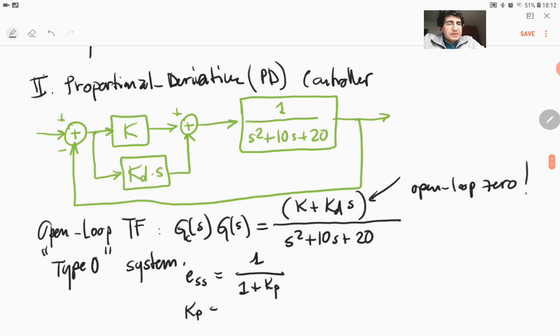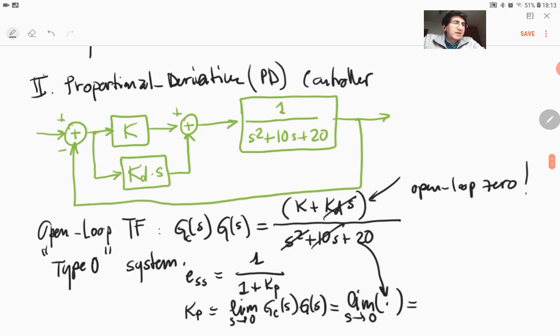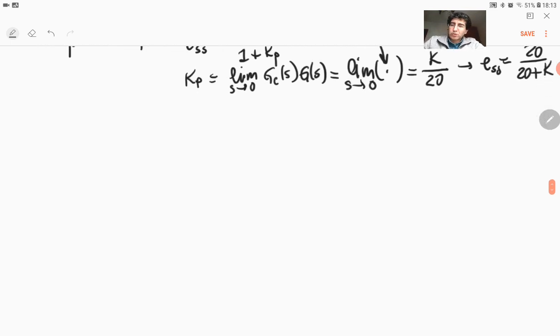And where Kp is limit S goes to 0, Gc of S, G of S. And that is given by limit S goes to 0. It's already here, right? So this term will be canceled out as S goes to 0. These two terms will be canceling out. So this term still comes out as K over 20 and therefore ESS is not changed. It's still the same, 20 over 20 plus K. So nothing has changed with the steady state error. So the derivative controller didn't have any effect on the steady state error.